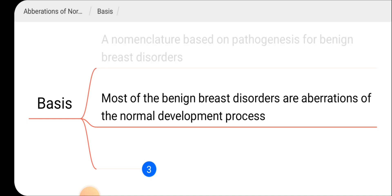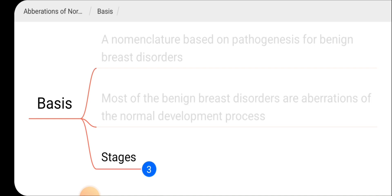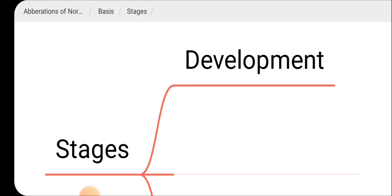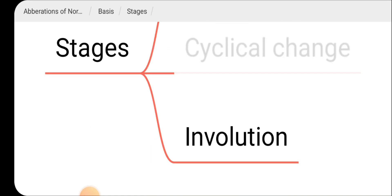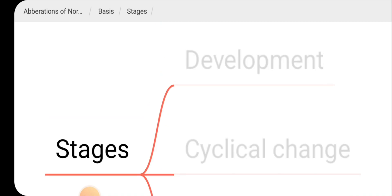Most of the benign breast disorders are aberrations of the normal development process, therefore we can develop a classification such as ANDI to easily remember the benign breast disorders. The breast goes through development usually between 15 to 25 years, then cyclical change between 25 to 35 years, then involution. These stages have been considered during the ANDI classification.